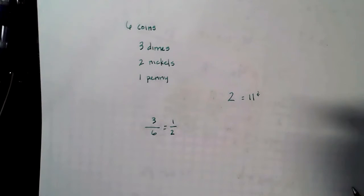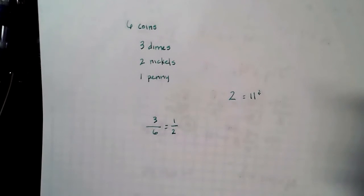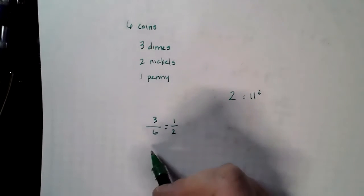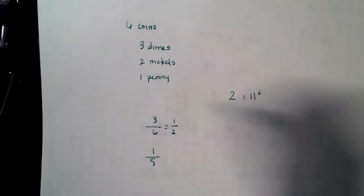Our second coin in the same handful is a penny. That means the penny, there's only five coins left because there's already a dime in our hand. We use five as the bottom of the ratio. We can only pull one penny because there's only one.